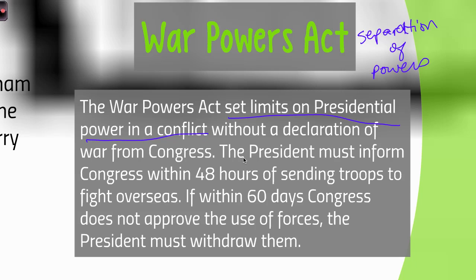For example, when we sent troops to Saudi Arabia, Kuwait, Iraq, or Afghanistan, we did not declare war in any of those cases. The president can send troops, but now he has to inform Congress within 48 hours. If within 60 days they don't approve it, then he has to withdraw the troops. This is going to uphold separation of powers and give Congress another way to check the president through checks and balances.